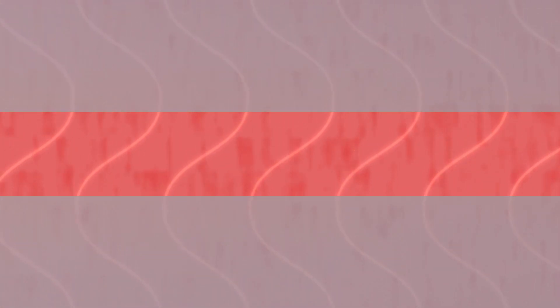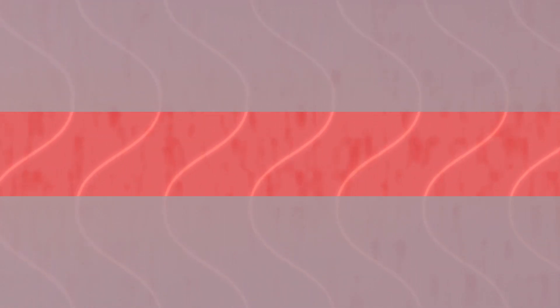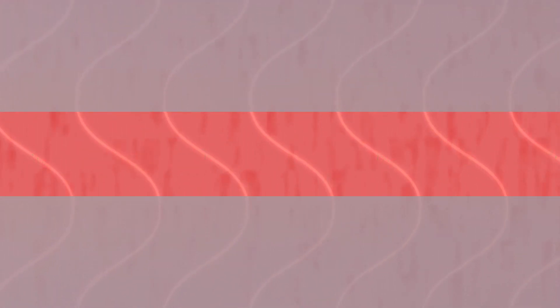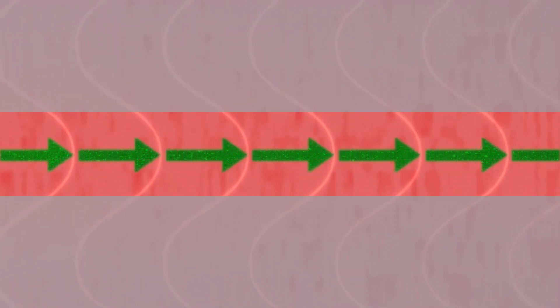These light waves have electric fields that oscillate back and forth, as shown by the arrows. Green indicates a positive electric force that can accelerate an electron. Red represents a retarding force.